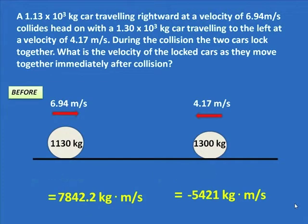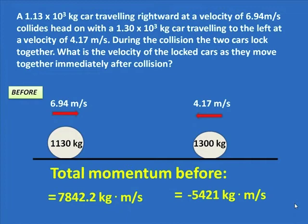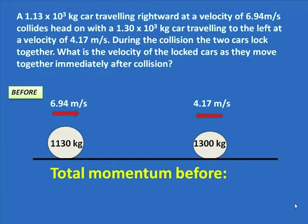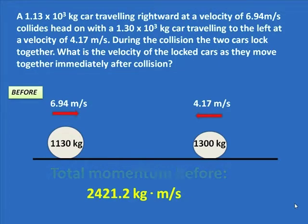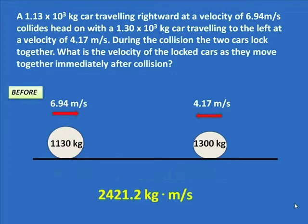To find the total momentum of this system — the two cars moving towards each other — we take the momentum of each and add them up. This is linear momentum; they're in one straight line. The answer becomes 2421.2 kilogram meters per second, and that's the total momentum of the system before the collision.